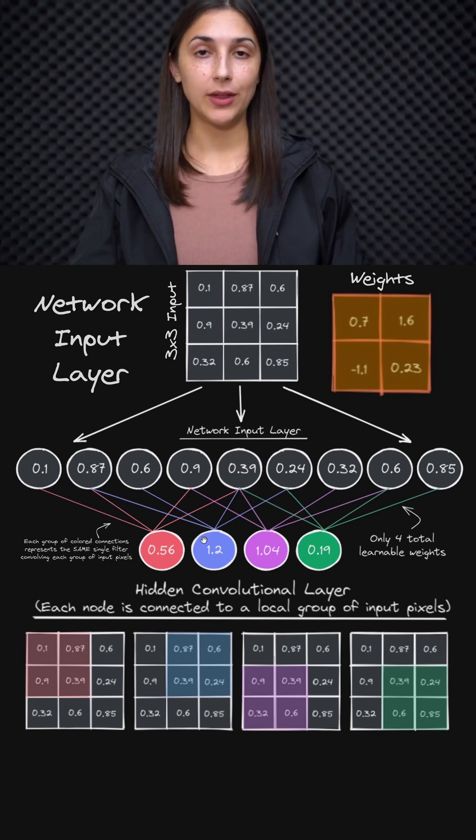And as we already are familiar with the convolution operation, we can understand that the calculation that's actually occurring to obtain these values is the same weighted sum calculation that would occur if this layer were a fully connected layer.